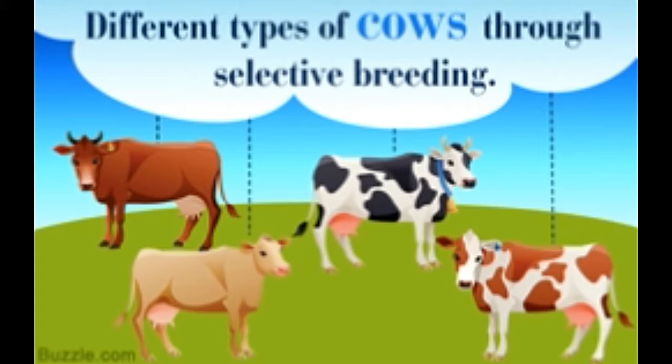Natural and artificial selection forms a basis of evolution on this planet. This post explains the basic difference between the two.